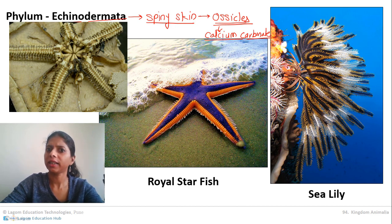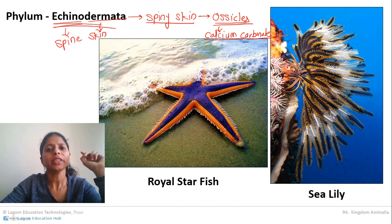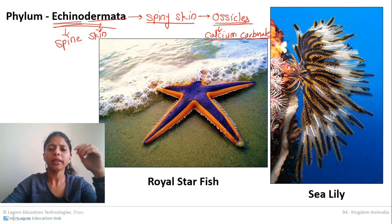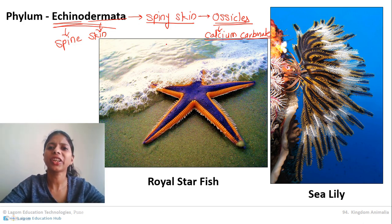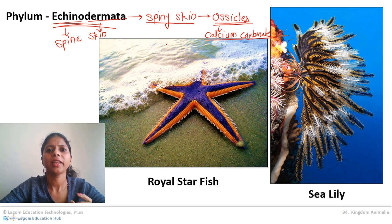So the second characteristic is their spiny appearance due to an exoskeleton made of ossicles of calcium carbonate. Moving to general characteristics: they have a tube-within-tube body plan, meaning the digestive system has two openings — mouth and anus.